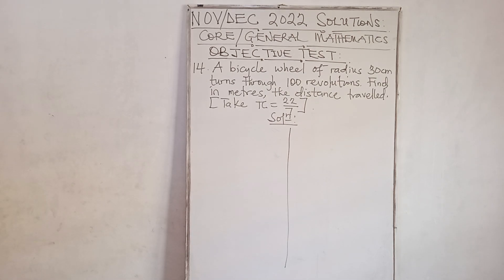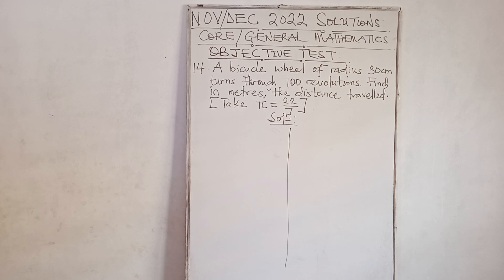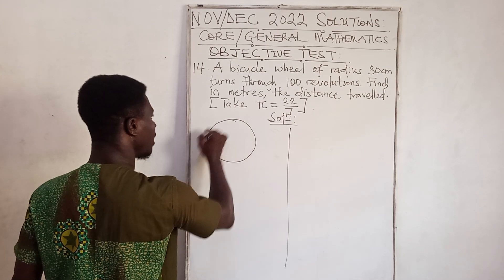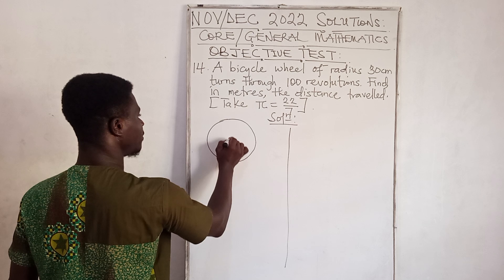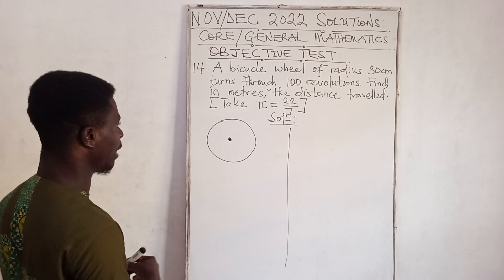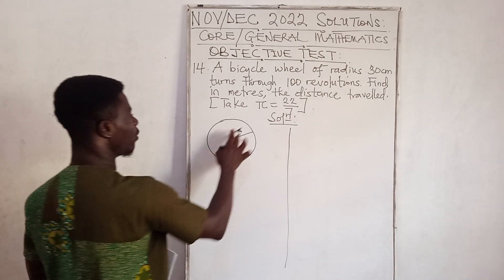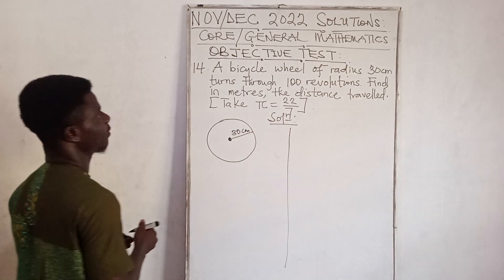Question 14: A bicycle wheel of radius 30 centimeters turns 100 revolutions. Find the distance traveled in meters. Take π = 22/7. We have a bicycle wheel where the radius — the line from the center to any point on the circumference — is 30 centimeters.